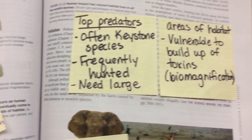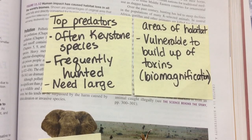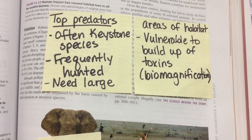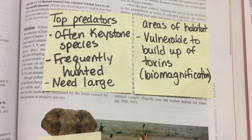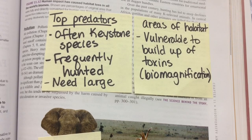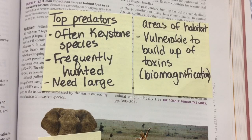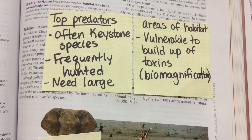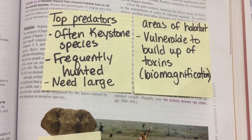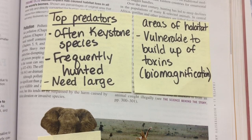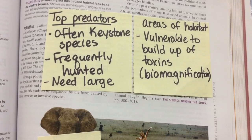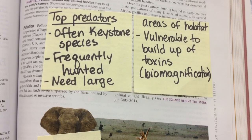Page 285 — you need to know some information about top predators. They're often, but not always, keystone species. They are frequently hunted, they need large areas of habitat, and they're vulnerable to a buildup of toxins through biomagnification, which we'll study later in Chapter 14. We see this around Santa Clarita and Southern California — mountain lions are eating rats killed with rat poison, and that poison is building up in the mountain lions' bodies and killing them.